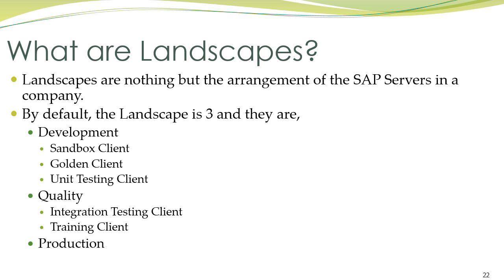So what is the development server? Inside the development server you have something called the sandbox client, the golden client, and the unit testing client. The sandbox client is nothing but the test and trial client where you can roughly code. The golden client is where real-time development activities happen — it is not a test and trial client. Once the development is done in the golden client, it is transferred to the unit testing client where basic level testing happens.